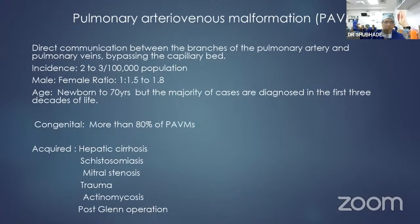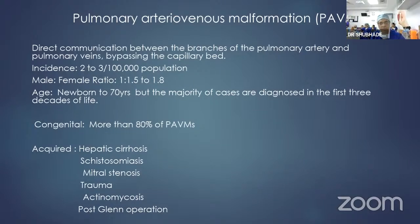Pulmonary arteriovenous malformation is a direct communication between the branches of the pulmonary artery and pulmonary veins, bypassing the capillary bed. The incidence is two to three per million population with female predominance. Most patients are congenital, and 80% of congenital PAVM may be due to hemorrhagic telangiectasia, an autosomal dominant disease.